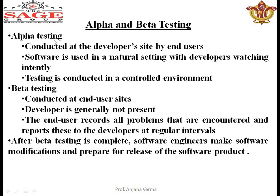Alpha testing is conducted at the developer site — where the product is built — and the developer conducts this testing together with the user. The software is used in a natural setting with the developer watching intently, and testing is conducted in a controlled environment. The user is also present there. Because the environment is favorable and everything is set up, that is alpha testing.